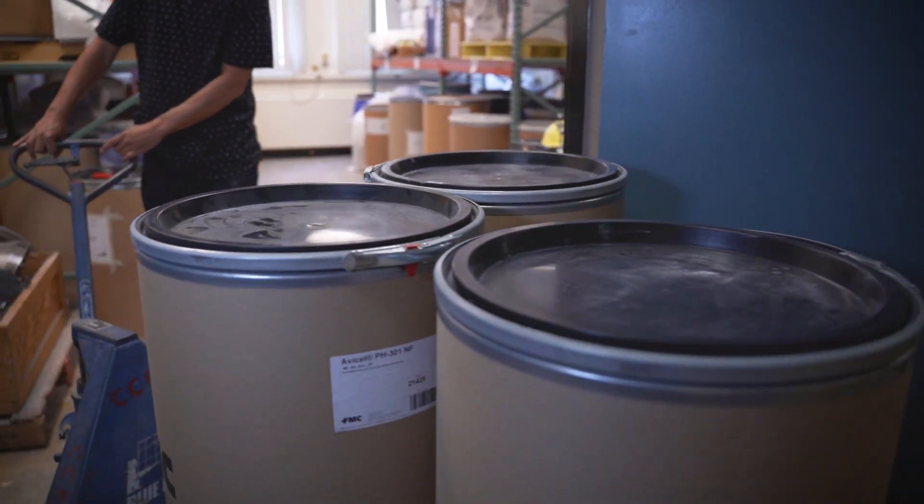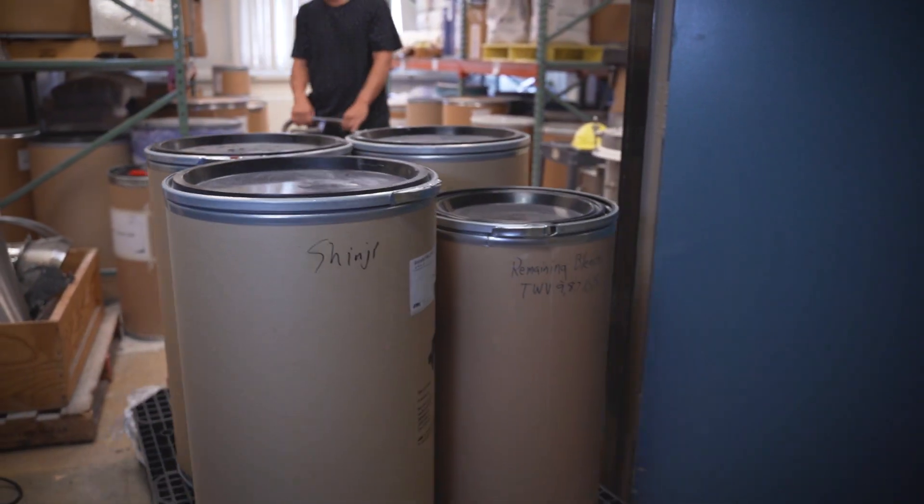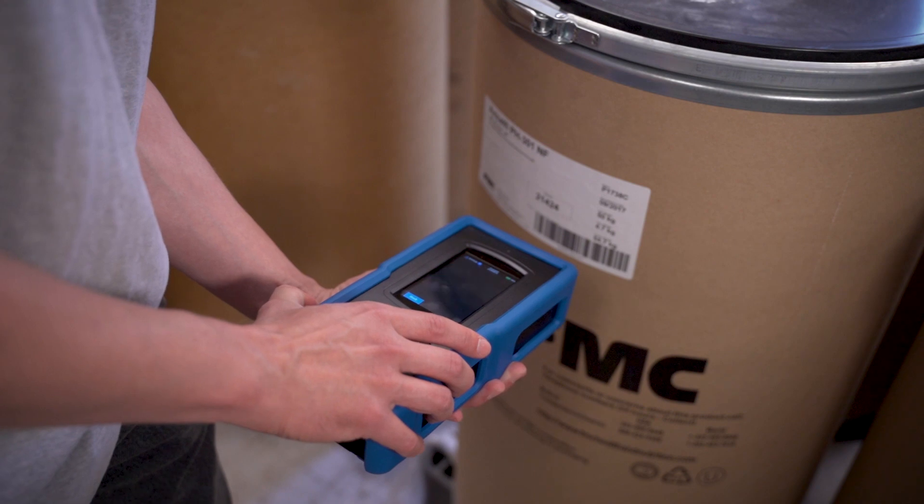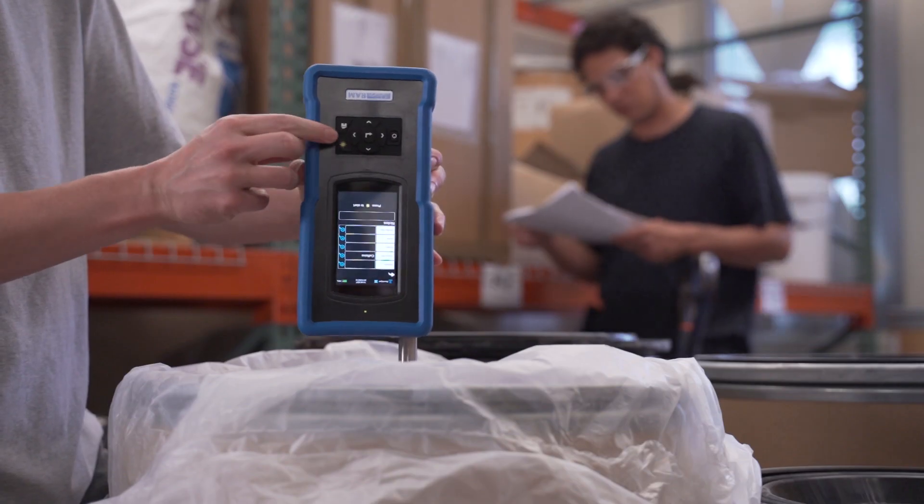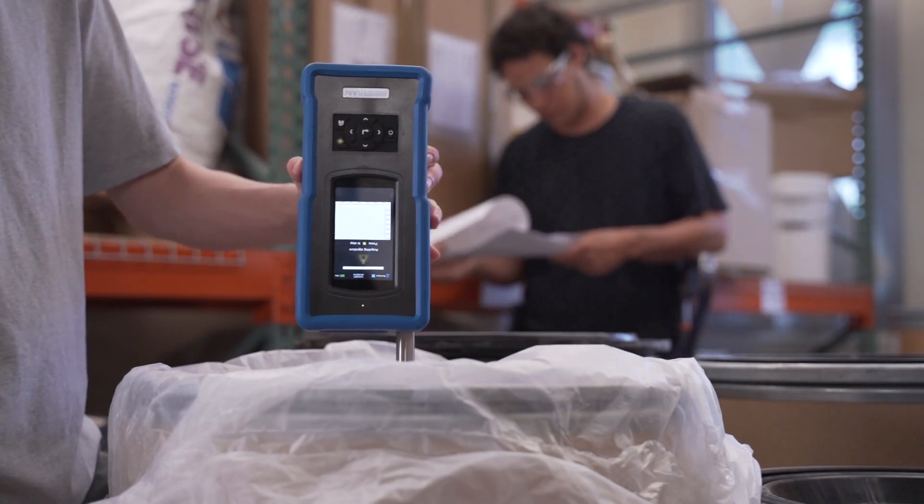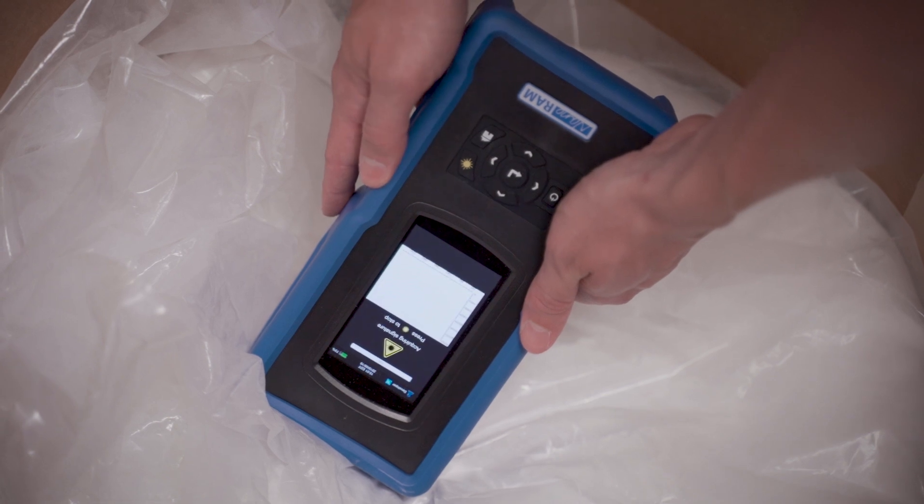The NanoRAM 1064 is used for incoming raw material identification at the loading dock, allowing users to avoid sampling and extensive quarantine delays before moving materials into production.